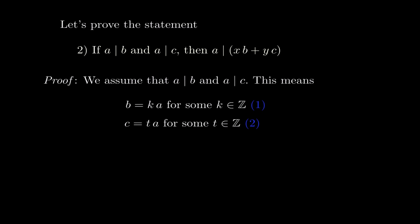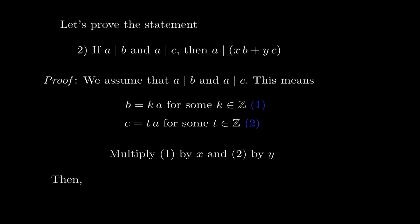Since we have xb and yc in our goal, we should multiply statement 1 by x and statement 2 by y. Multiplying both sides of statement 1 by x: xb equals xka — call that statement 3. If you have an equality you can multiply both sides by the same number and it remains true.